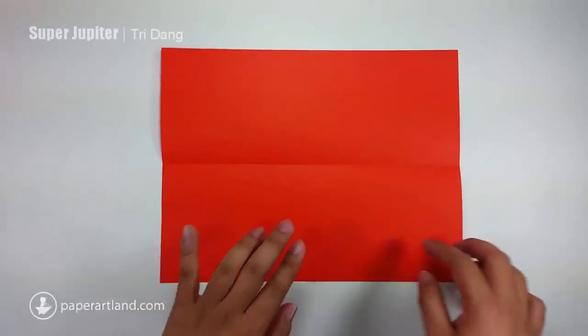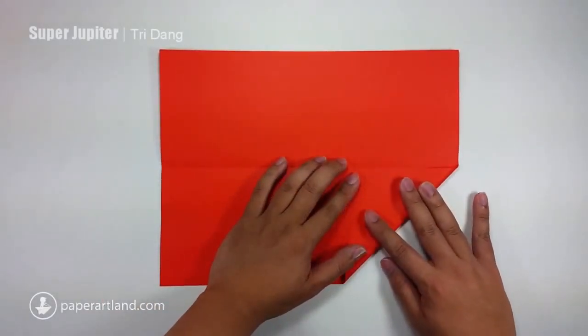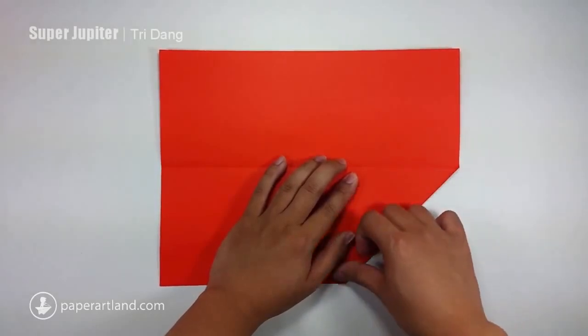Now, start from this edge, fold it to the center crease. And repeat the same fold for the opposite side.